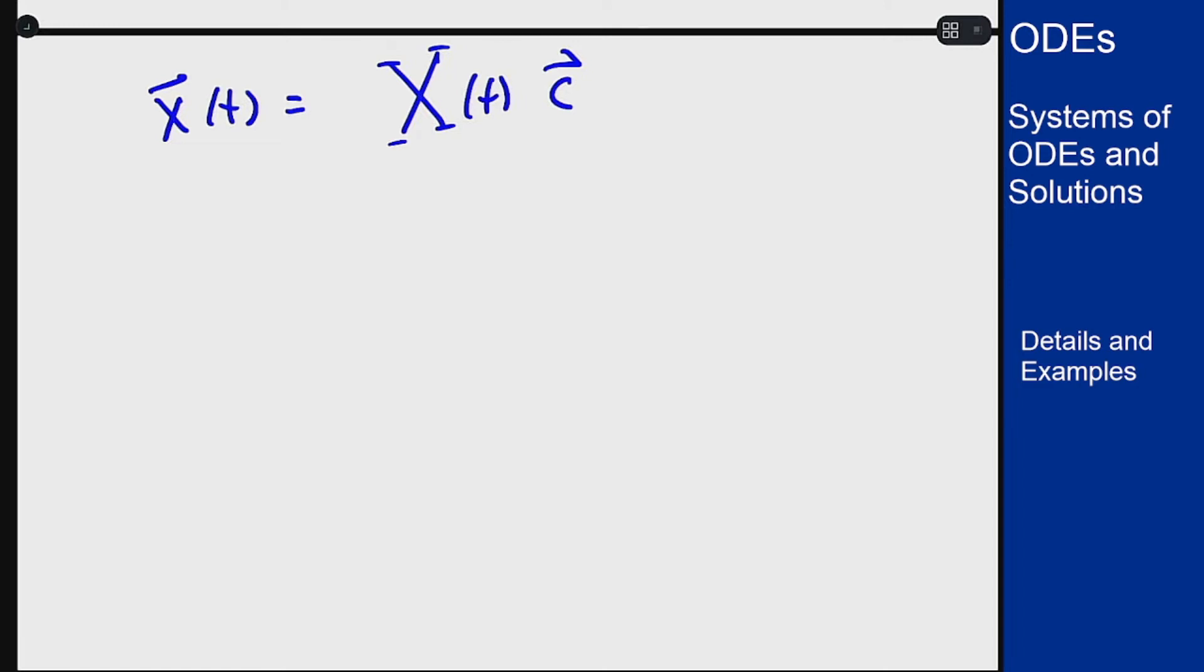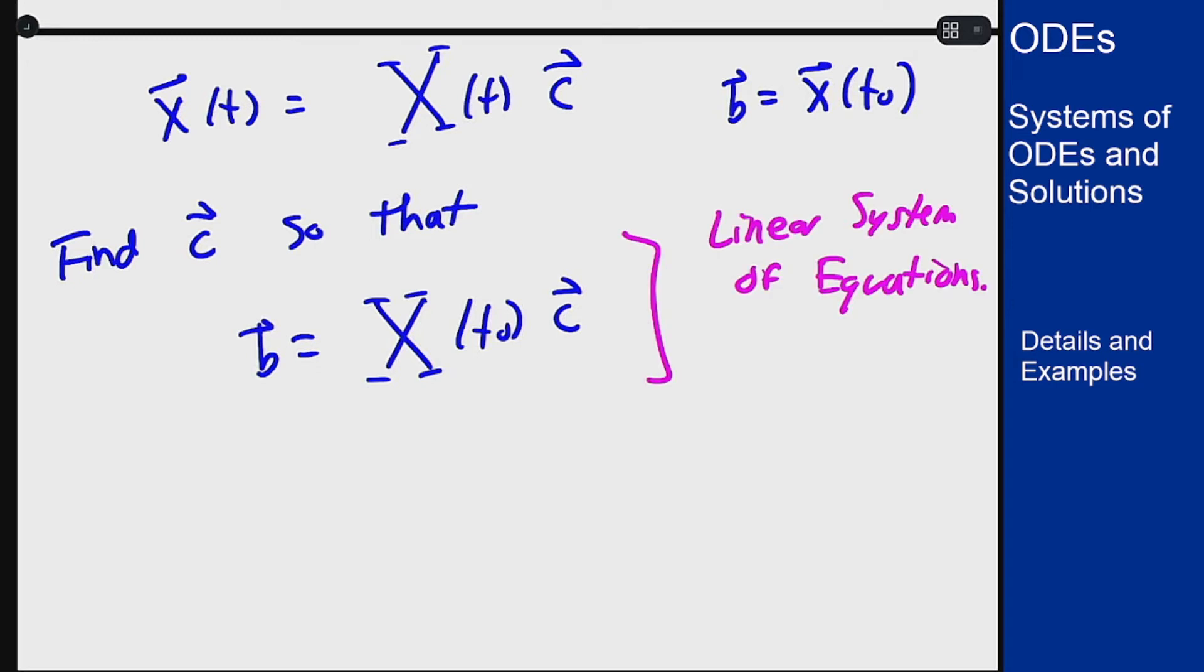Let's say I want to use the vector b as x at t0 for my initial condition. Well, this means I want to find c so that this vector b equals capital X at t0 times c. This is solving a linear system of equations and we can always do this provided this matrix was set up correctly.